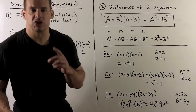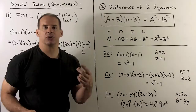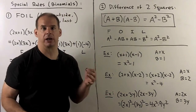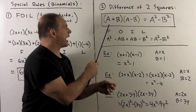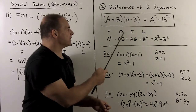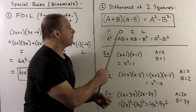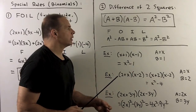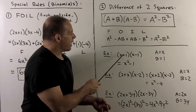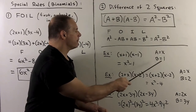We can apply FOIL to get the special rule for a difference of two squares: a plus b times a minus b equals a squared minus b squared. With FOIL we normally expect four terms, but here we only get two — something special is happening. Applying FOIL: First is a squared, Outside is minus ab, Inside is ab, Last is minus b squared. The minus ab and ab cancel, leaving a squared minus b squared. For example, x plus 1 times x minus 1: set a equal to x, b equal to 1, and we get x squared minus 1.